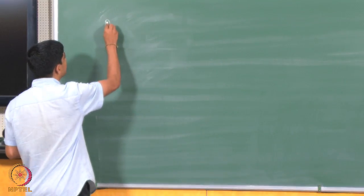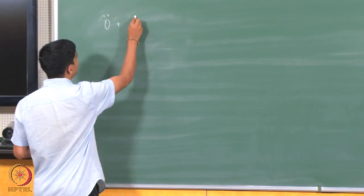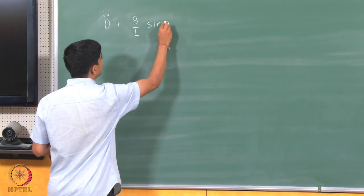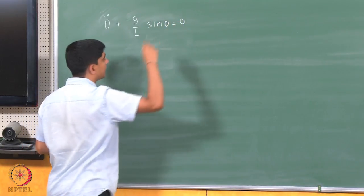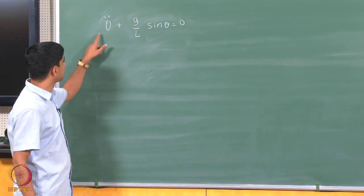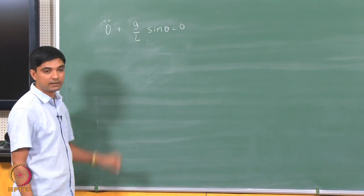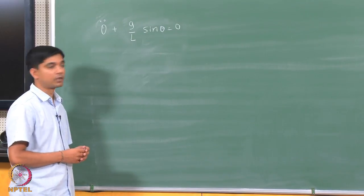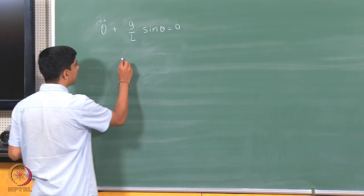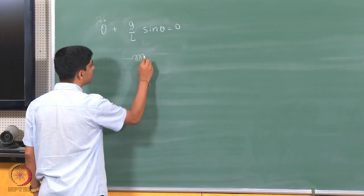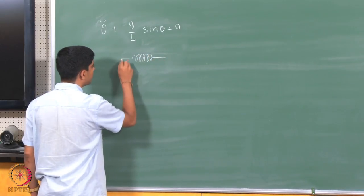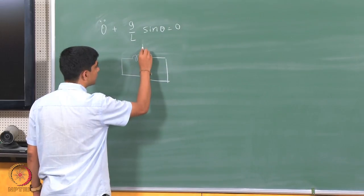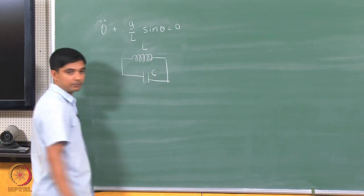Starting from a lossless pendulum for which the equations look like this, where theta is the angular displacement and theta double dot plus g over L sin theta equals 0, and this represents simple harmonic motion. Is there an electrical analog of such behavior or such dynamics? Well, let us take this circuit with L and C.